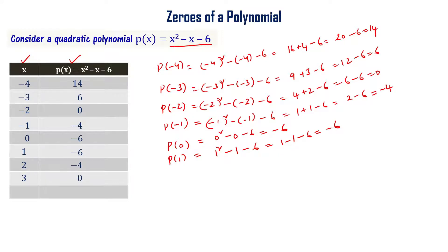For x equal to 2: p(2) = minus 4. For x equal to 3: p(3) = 0. For x equal to 4: p(4) = 6.